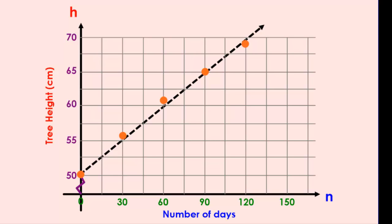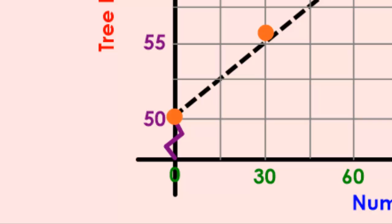Our scale has changed as well — every two blocks now represents 5 units. But notice that we don't start at 0; the first number you see is 50. There's a squiggly line there, which we call a break. We put a break into a scale when we don't start right at 0, or if the first block from the x-axis to our first scale point does not match the scale the rest of the axis uses.